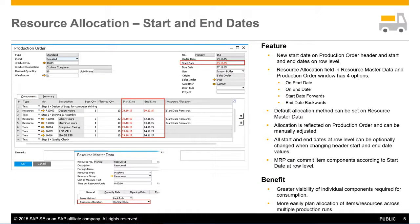The second update to the production module in version 9.2 is the introduction of a start date at the header level and row level dates. We can now define start and end dates for all components and resources in a production order. In earlier versions it was only possible to define dates at the document header level, which meant there was no option to earmark components and resources exactly on the date required. All row level dates have to be within the header level dates.